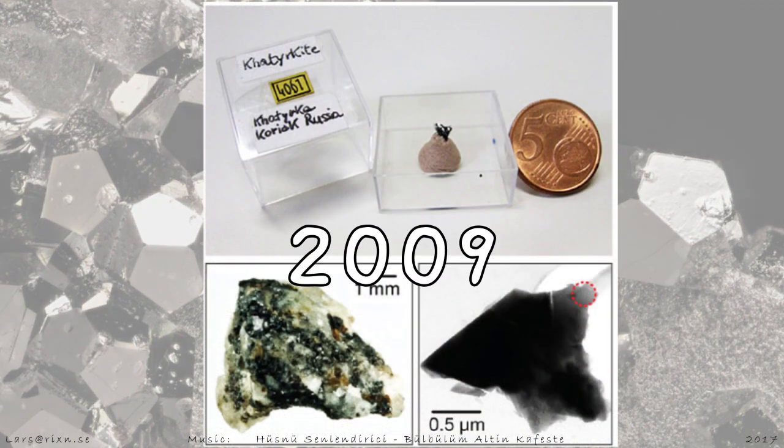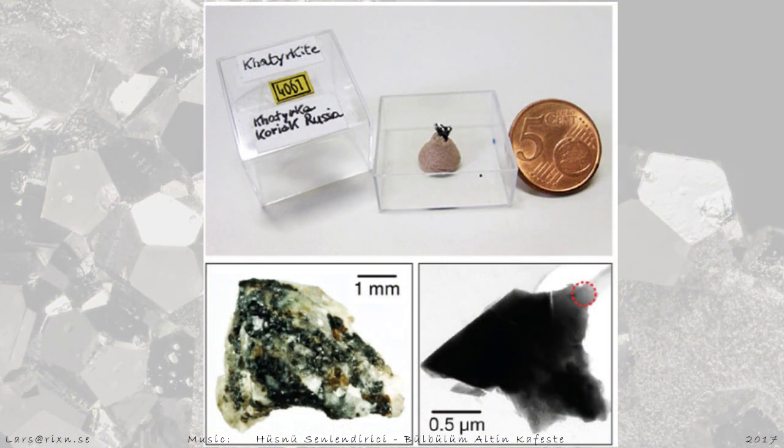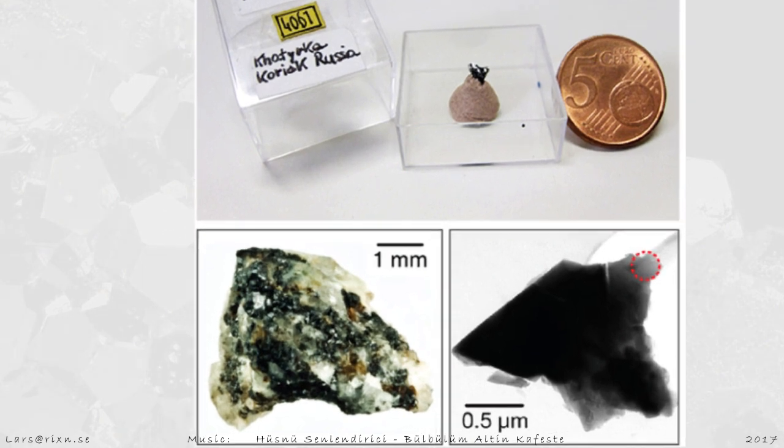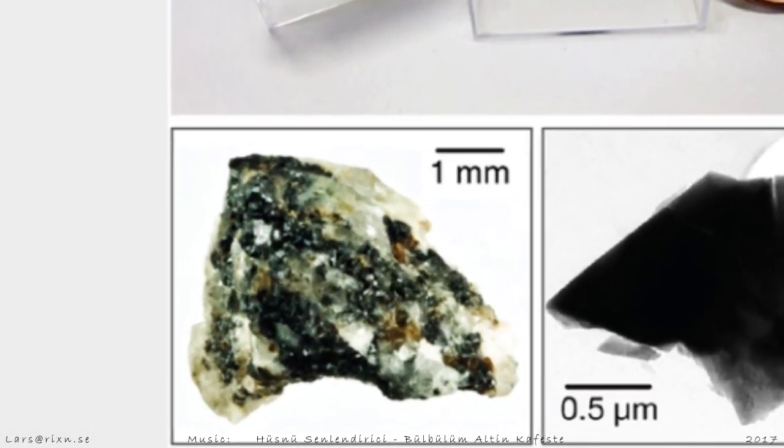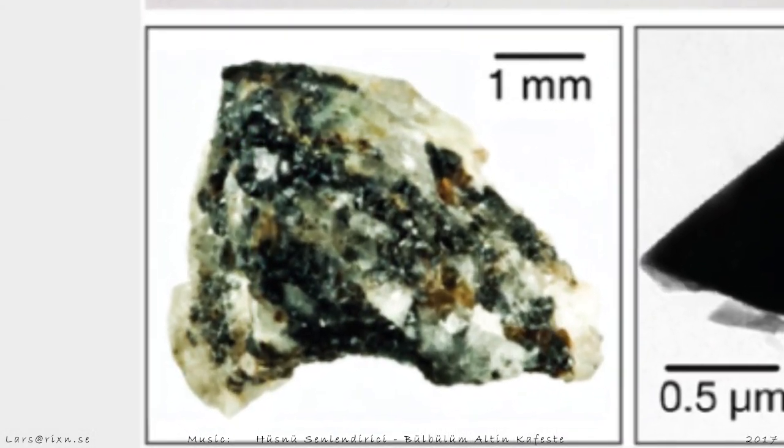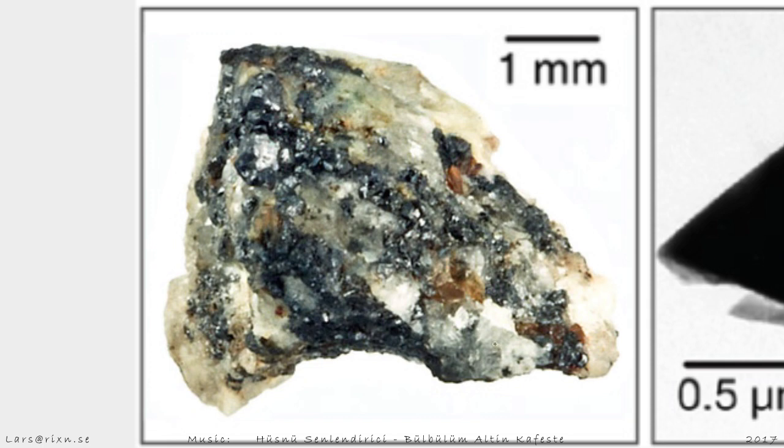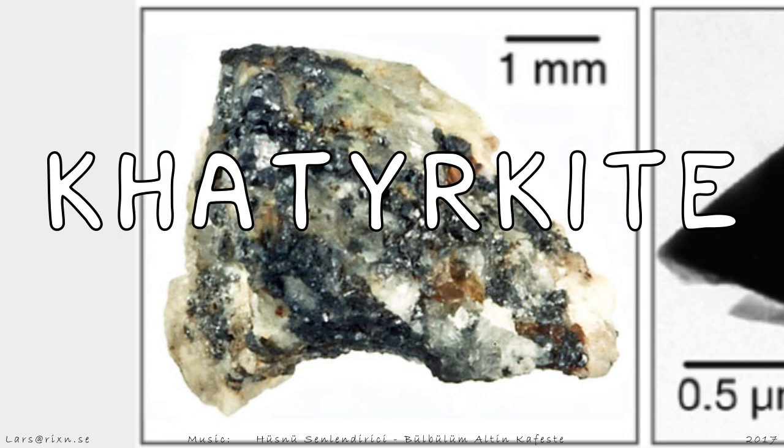In early 2009, the first example of a natural quasicrystal was discovered in the basement of the museum, in a rock sample from a 4.5 billion year old meteorite made of catarchite, coming from the Kauriak mountains of far eastern Russia.